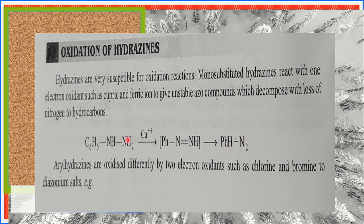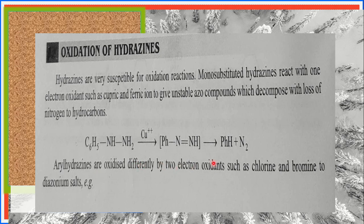For monosubstituted hydrazines, one-electron oxidants such as cupric or ferric iron are used. Initially, an unstable azo compound is obtained, which then decomposes — releasing nitrogen and forming hydrocarbon. Now, aryl hydrazines are oxidized differently. By two-electron oxidants such as chlorine and bromine, aryl hydrazines give diazonium salts. When a two-electron oxidant is used in the oxidation of any aryl hydrazine, diazonium salt is obtained.